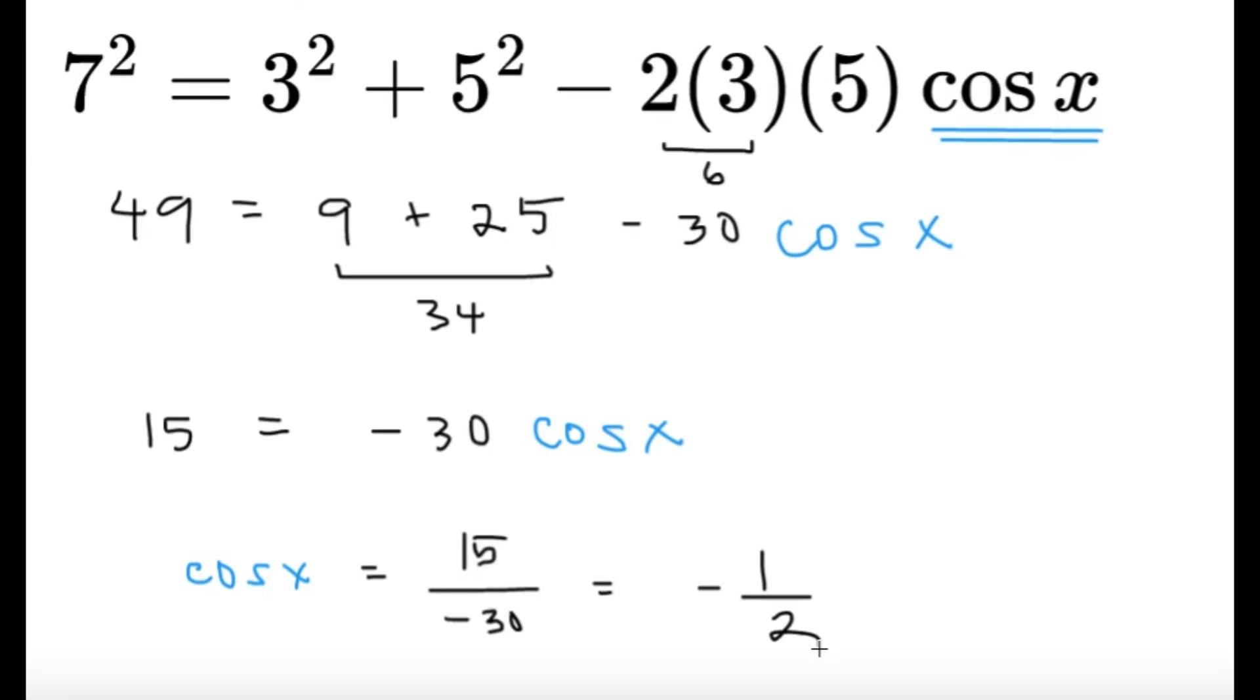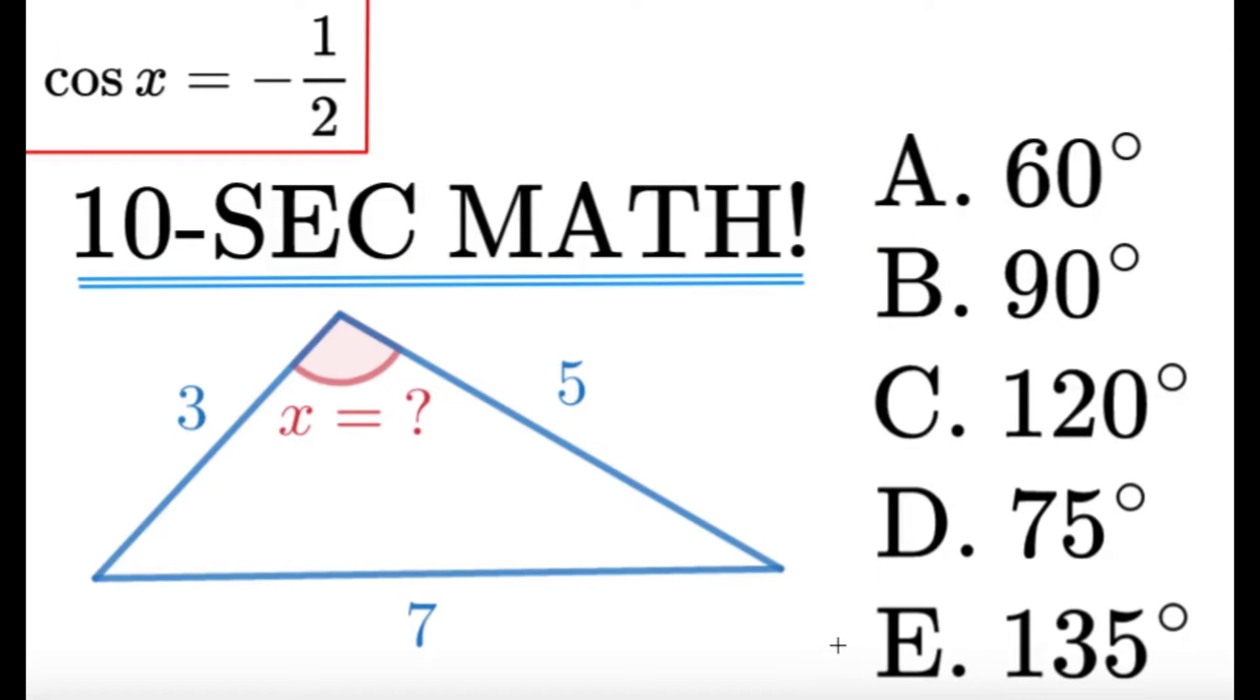So let's go back to the five choices. We have cosine x equals negative 1 half. Cosine of 60 degrees gives us 1 half. Cosine of 90 degrees gives us zero. Cosine of 120 degrees gives us negative 1 half.